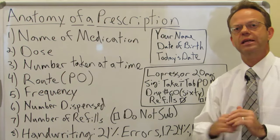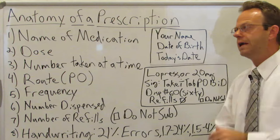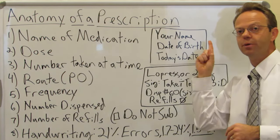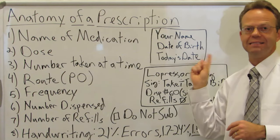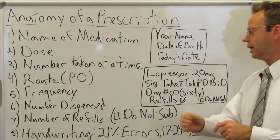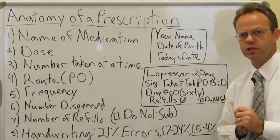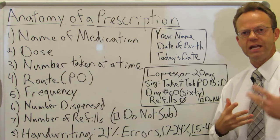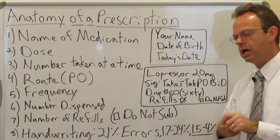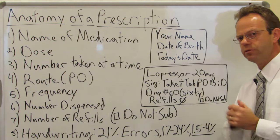Now let's look at how this looks on an actual prescription pad. Keep in mind, this doesn't even include things like your name, your date of birth, and today's date — those have to be on there as well. Here's a specific example: Lopressor, a blood pressure medication whose generic name is metoprolol — it's been generic for a very long time. Lopressor, 20 milligrams — those are typically written on the same line.